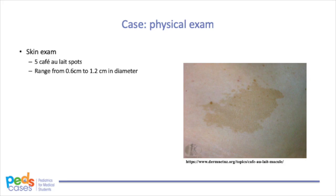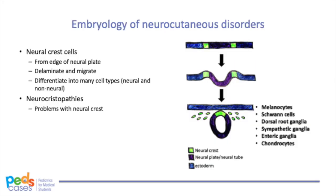Let's review neurocutaneous disorders, starting with the embryology and genetics. Neural crest cells are ectodermal cells that arise from the edge of the neural plate. When the neural tube forms, neural crest cells delaminate and migrate away, differentiating into multiple cell types including smooth muscle cells, chondrocytes, melanocytes, neurons, and Schwann cells. Neurocutaneous disorders belong to a larger group called neurocristopathies — disorders arising due to problems with neural crest cells. Because neural crest cells migrate throughout the developing body, neurocutaneous disorders present with a range of phenotypes affecting multiple organ systems.